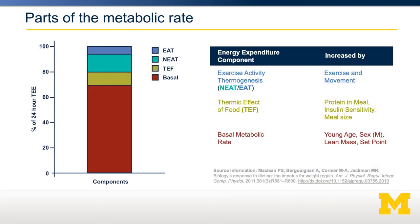If we look at an individual's energy expenditure, we can see that it can be broken down into several components. You might think the biggest component of energy expenditure is that run you went on earlier today, how much exercise you had, or how physically active you are. But in fact, for the vast majority of people, the largest component of energy expenditure is their resting metabolic rate, or their resting energy expenditure, shown here on the left in red.